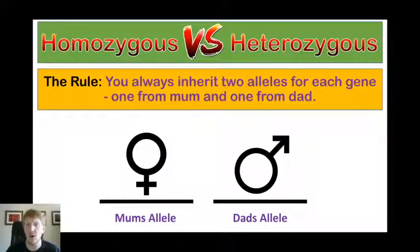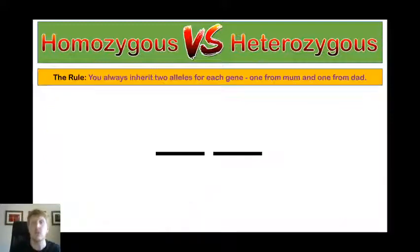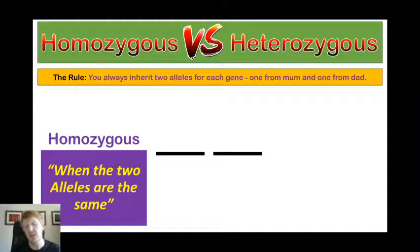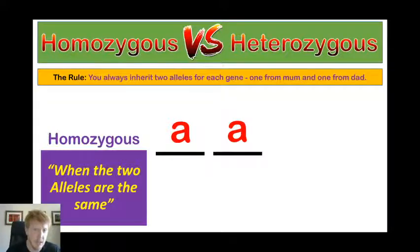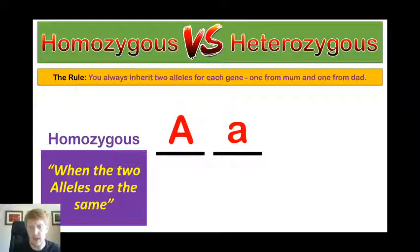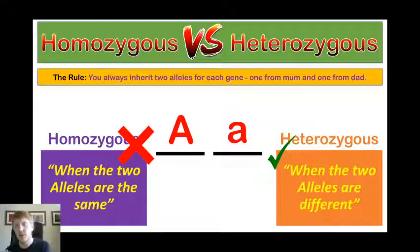Let's link that into these two next terms: homozygous versus heterozygous. The rule here is you always inherit two alleles for each gene — you get one from mum and one from dad. For example, we might inherit a brown hair allele from mum but a red hair allele from dad. Homozygous is when the alleles are the same — for example, capital A, capital A: they are the same, so this individual would be homozygous. Lowercase a, lowercase a: those alleles are the same, so this individual would also be homozygous. But if we've got a capital A and a lowercase a, these are different, so we use heterozygous when the two alleles are different. Homo means same, hetero means different alleles.